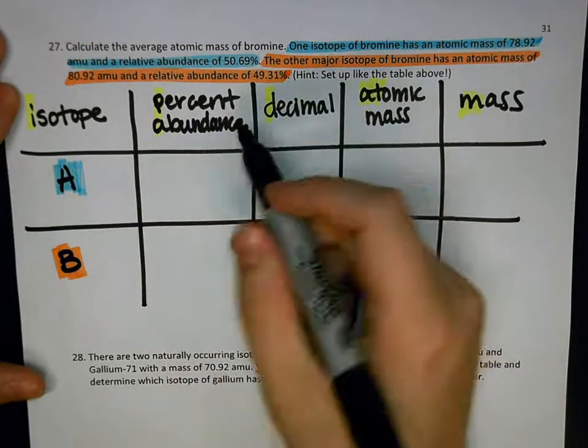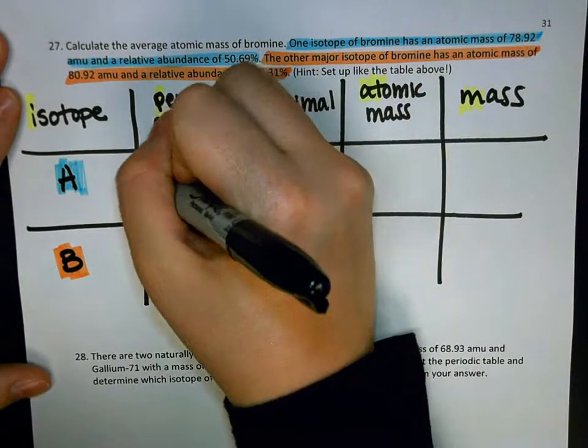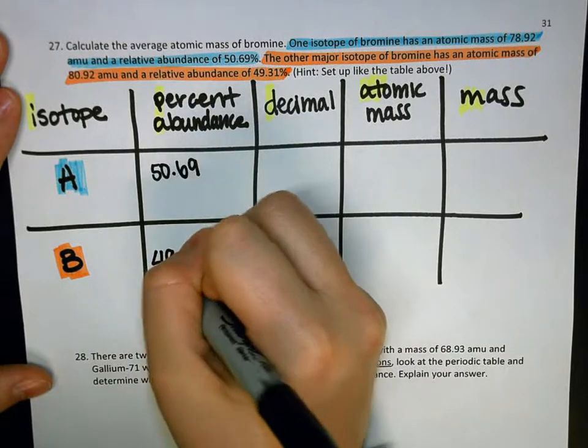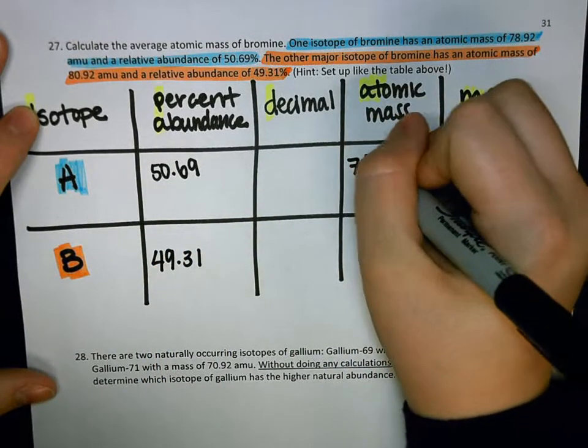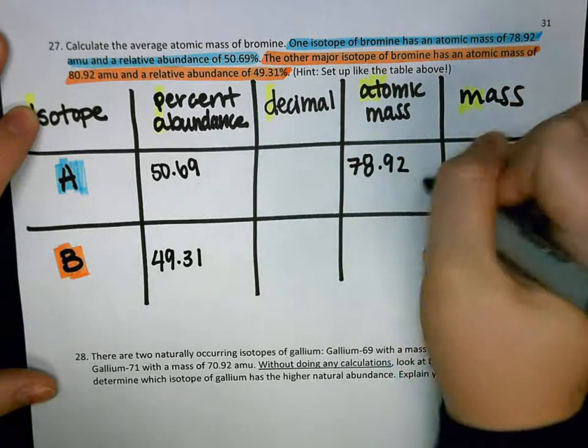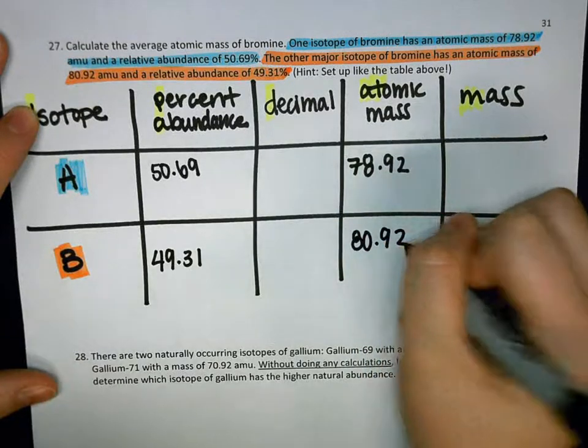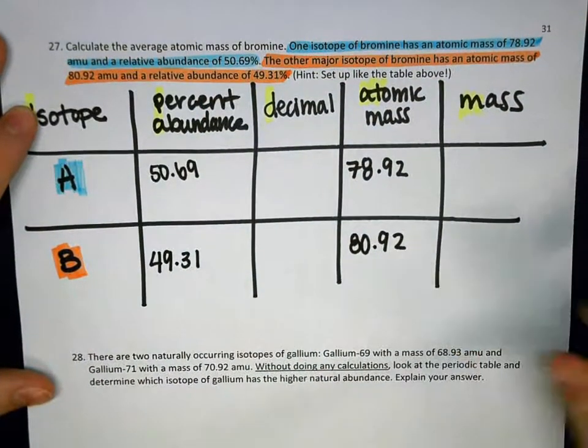Let's fill in what we can. Percent abundance for the first isotope is 50.69, and for the second isotope, it's 49.31. The atomic mass, 78.92, and 80.92. I'm just filling these in from the problem, the numbers that we highlighted.